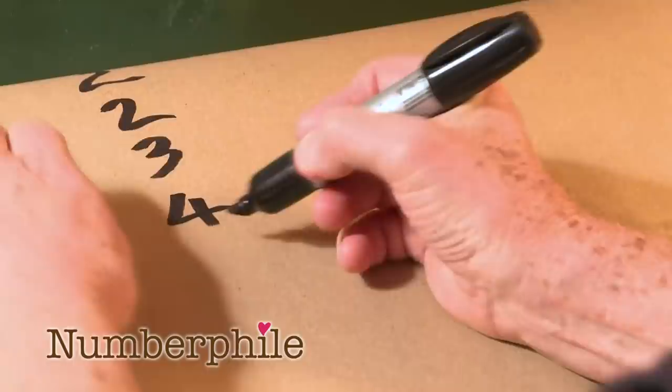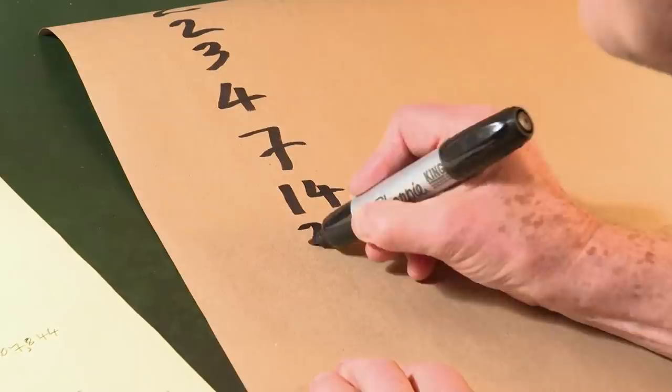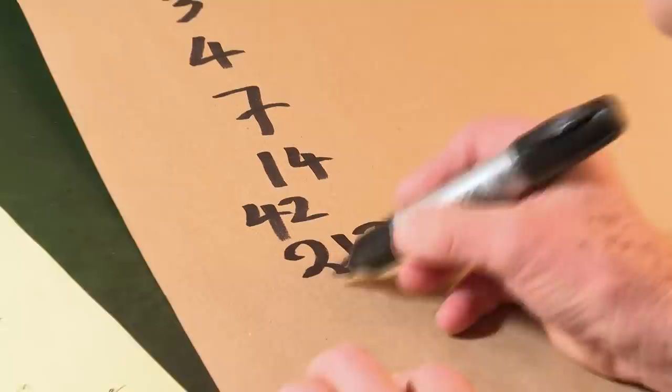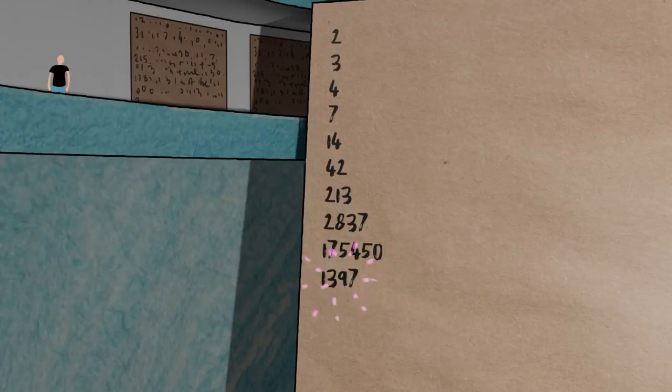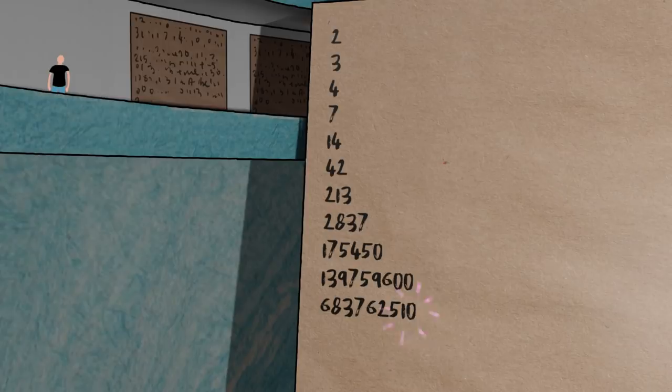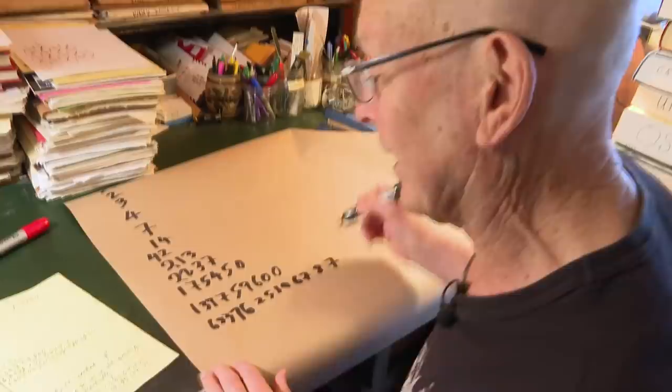Two, two, three, four, seven. Looks easy, right? 14, 42, 213, 2837, 175450, 1397, 5975, 9600, 68376, 25106787.